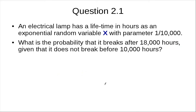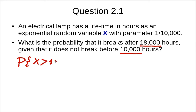Now let's look at another example. What's the probability that it breaks after 18,000 hours, given that it doesn't break before 10,000 hours? So basically, we write it as P(x > 18,000 | x > 10,000).